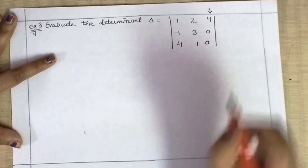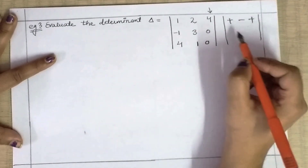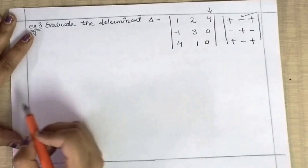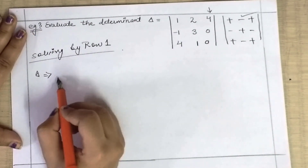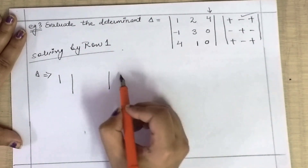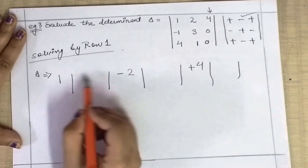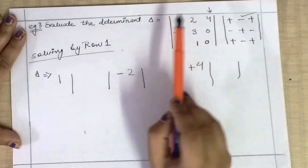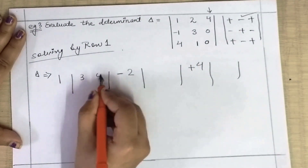Pay attention to the sign chart. For row 1: plus, minus, plus. So using row 1, write element 1 with positive sign, then the 2×2 minor values. Hide that element's row and column — you get 3, 0, 1, 0. Then write minus 2 with its sign, hide that row and column — values are minus 1, 4, 0, 0. Then plus 4, hide that row and column — values are minus 1, 3, 4, 1.